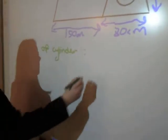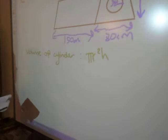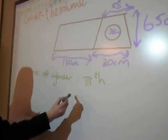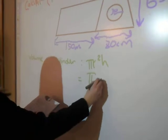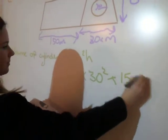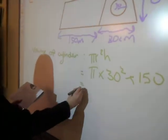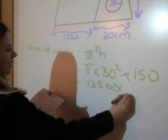To do this, we use the formula pi r squared h. We then substitute the numbers from the diagram in the formula. So this works out as pi times 30 squared times 150. That then gives us an answer of 135,000 pi.